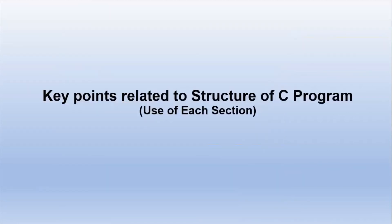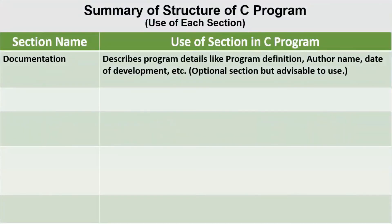Now let's see key points related to the structure of a C program. The documentation section describes program details like program definition, author name, date of development, etc.